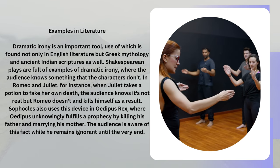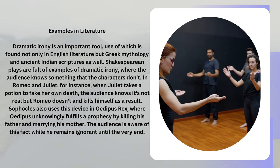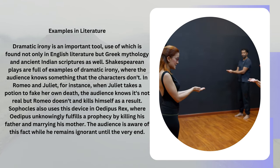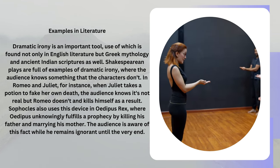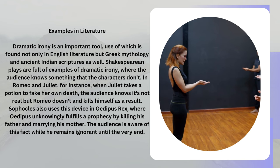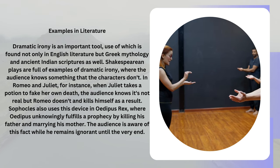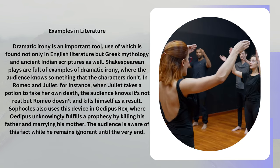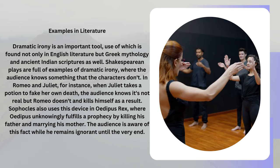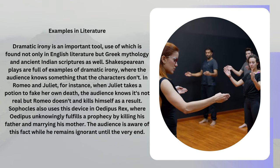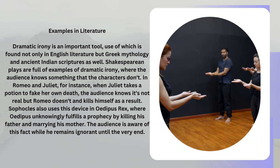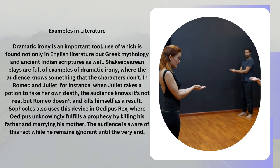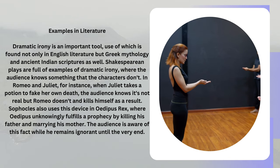In Romeo and Juliet, for instance, when Juliet takes a potion to fake her own death, the audience knows it's not real but Romeo doesn't and kills himself as a result. Sophocles also uses this device in Oedipus Rex, where Oedipus unknowingly fulfills a prophecy by killing his father and marrying his mother. The audience is aware of this fact while he remains ignorant until the very end.